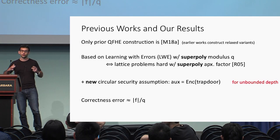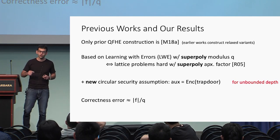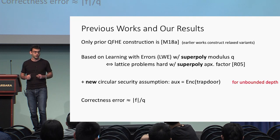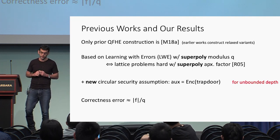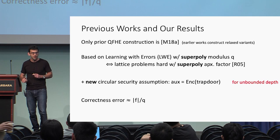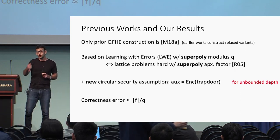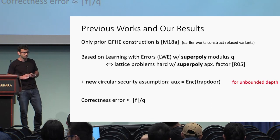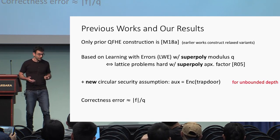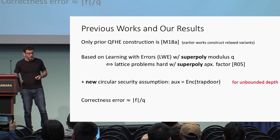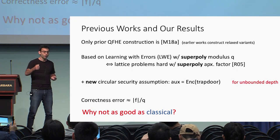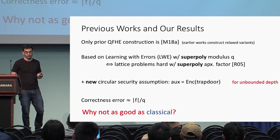Additionally, for the strongest notion of fully homomorphic encryption, you need a circular security assumption — this holds even in the classical setting. Mahadev's quantum scheme also needed this, but she required a new circular security assumption that seems stronger than the ones used for classical schemes. It's pretty amazing that this definition can be achieved. But let's be greedy and ask: now that we know it's possible, why can't it be as good as classical fully homomorphic encryption schemes?